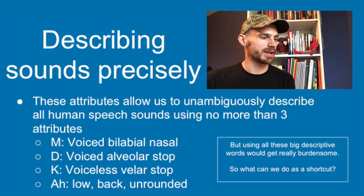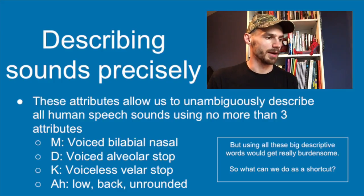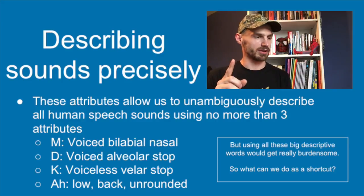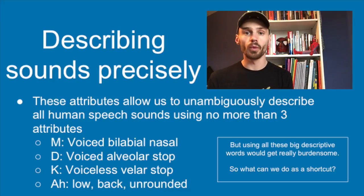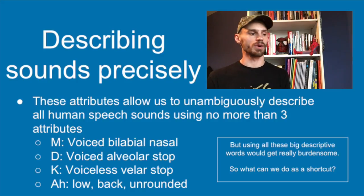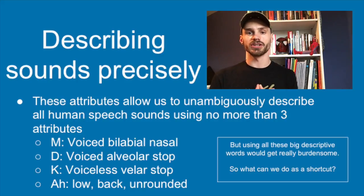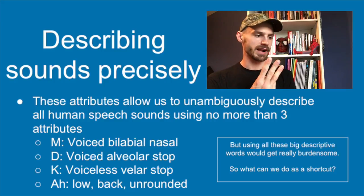You only need three attributes to unambiguously describe a speech sound. For example, there's only one voiced bilabial nasal sound, and that's 'm.' No other sound can be described as voiced bilabial nasal. There's only one low back vowel, and that's 'ah.' We'll be able to describe a whole range of sounds using just three criteria for consonants and three for vowels.